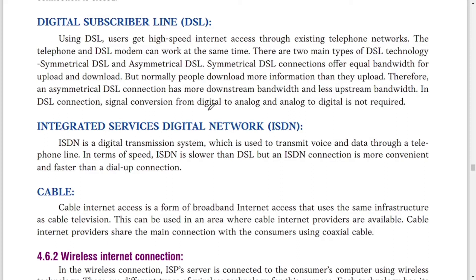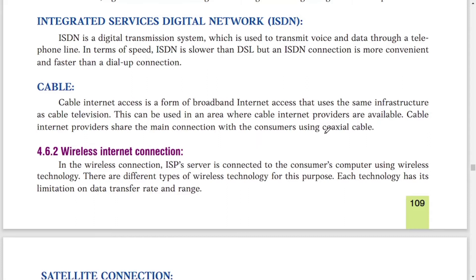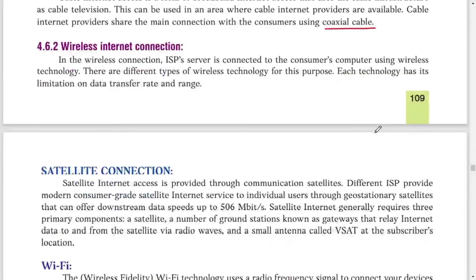ISDN is also a type of wired connection where internet is provided through a telephone line. Cable internet access is a form of broadband internet that uses the same infrastructure as cable television — you receive the internet through a wire just like cable TV. To use a cable connection, your area must be covered by that internet provider. Coaxial cables or fiber cables are mostly used for this type of connection.